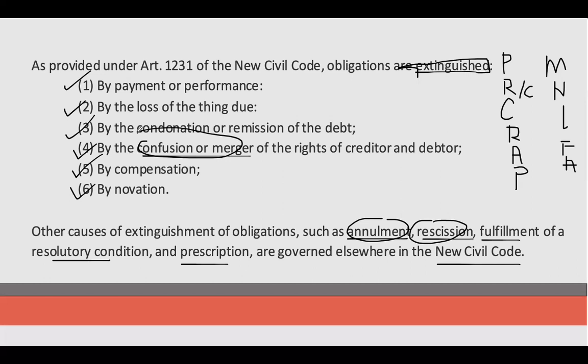'Pwede bang bigyan mo na ako ng one hundred thousand?' 'E teka lang, hindi pa due and demandable yan eh.' October 10 example lang, October 5 pa lang ngayon, so wala pang due date, hindi pa siya demandable. Sabi ni Denver, 'Pwede bang bigyan mo na ako ng one hundred thousand? O kahit ninety-nine thousand na lang para discountan kita ng one thousand.' Sabi naman ni Juan de la Cruz, 'Uy makakatipid ako ng one thousand, sige na nga.'